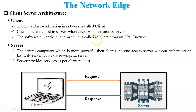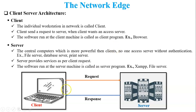The software running at the client machine is called a client program — for example, a browser. The software running at the server machine is called a server program — for example, a file server or many other server-side softwares.